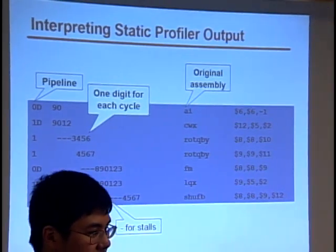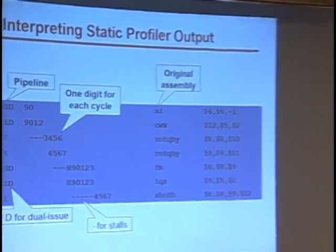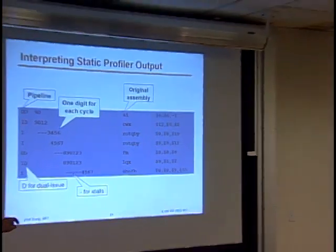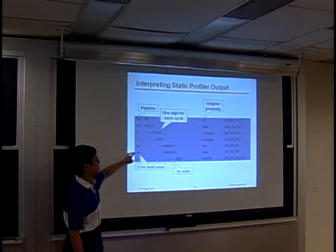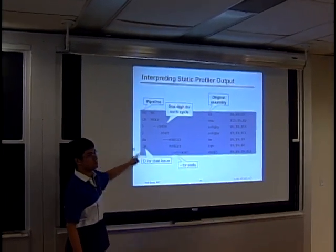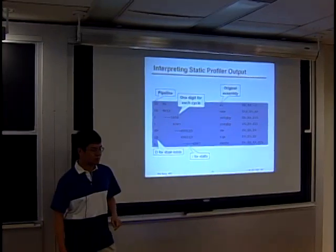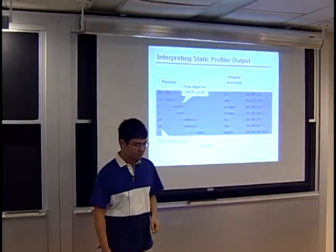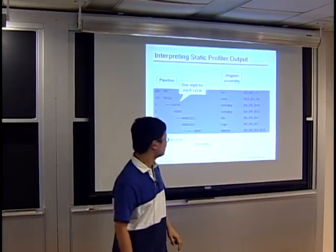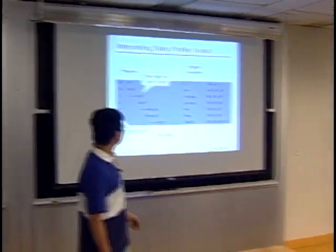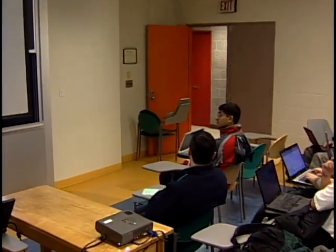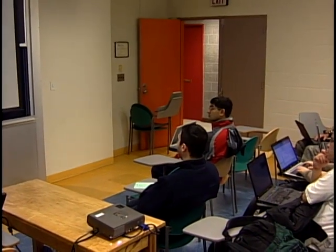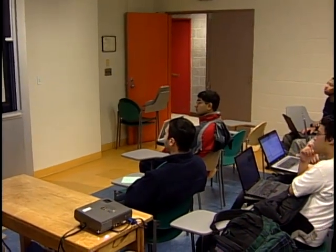Dual issue just means that two instructions are going to be executed at the same time. Can people figure out, for example, what is the latency for the fm instruction? How many cycles does fm take?